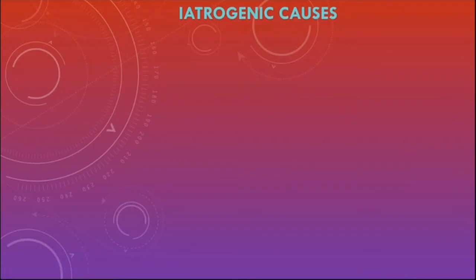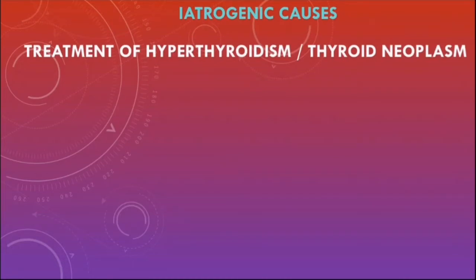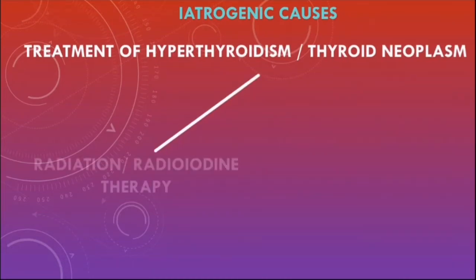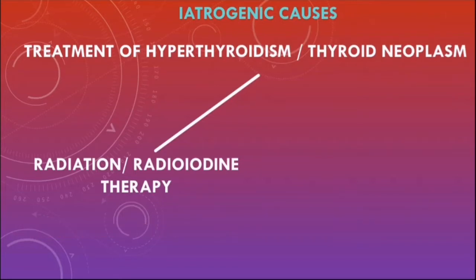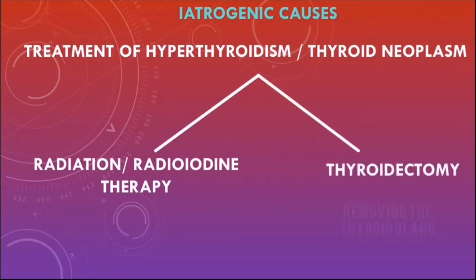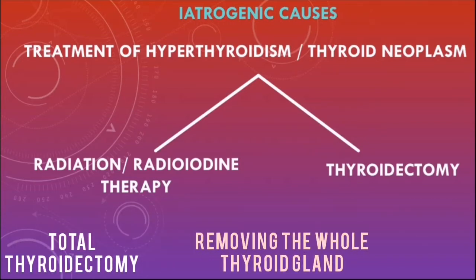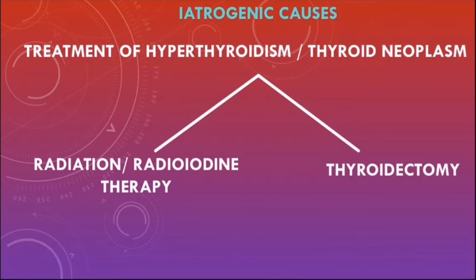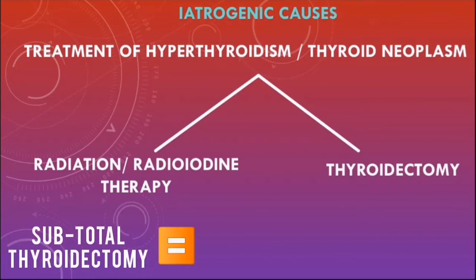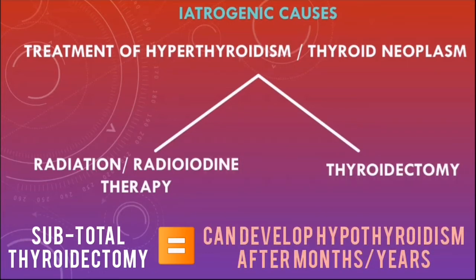There are also iatrogenic causes of primary hypothyroidism. Treatment of hyperthyroidism or a thyroid neoplasm with radiation or radioiodine therapy can damage functional thyroid tissue and cause hypothyroidism. A total thyroidectomy removes the whole thyroid gland and hypothyroidism can develop within a few weeks. A subtotal thyroidectomy removes only part of the gland and hypothyroidism may develop months or years later.